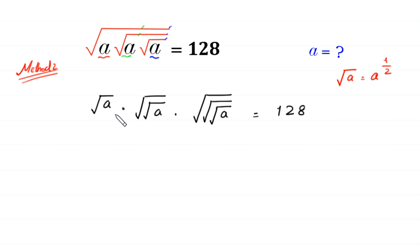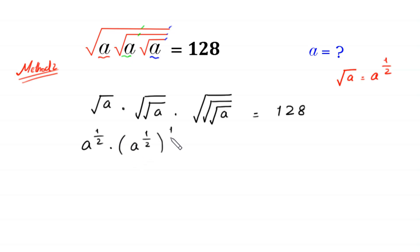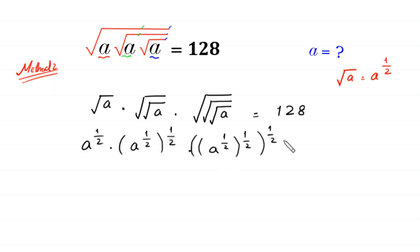By using the rule that square root of a equals a to the power 1/2, we can write the single square root of a as a to the power 1/2, the double square root of a as (a^(1/2))^(1/2), and the triple square root of a as (a^(1/2))^(1/2))^(1/2), all equal to 128.